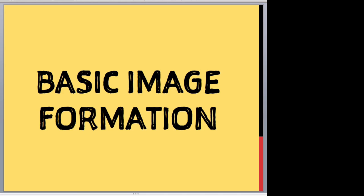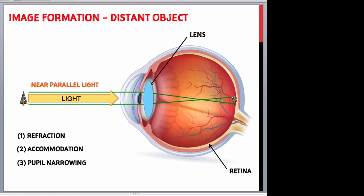Basic image formation. The eye is often likened to a camera. The optical elements help to focus light from an object onto a light-sensitive 'film' — i.e., the retina — whilst also ensuring that the correct amount of light enters the eye via the pupil to create an exposure. There are three processes needed to understand how the eye forms a clear image: first, refraction (bending of light by the lens and cornea); second, accommodation (change in shape of the lens); and third, constriction and narrowing of the pupil.